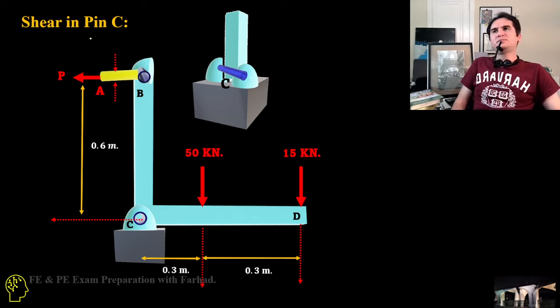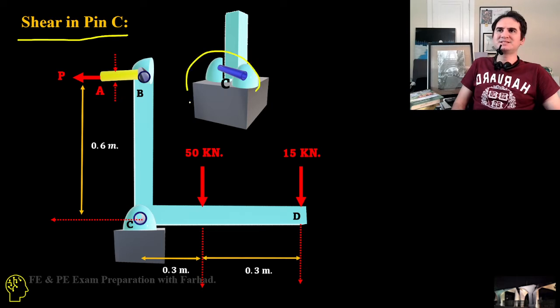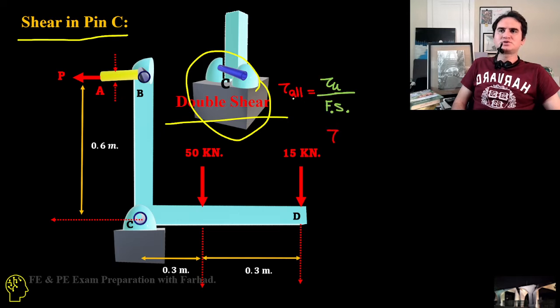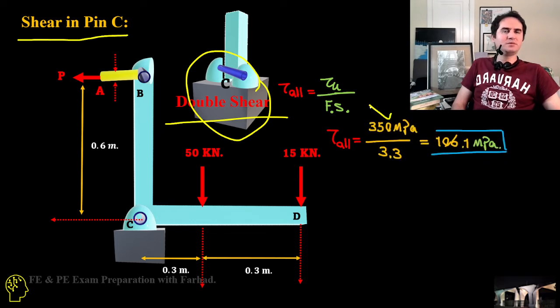In the second part, for shear stress at pin C, which you can simply see is in the double shear condition, shear allowable or acceptable is ultimate shear over factor of safety. Based on the problem statement, ultimate shear is 350 megapascals, factor of safety provided for the entire system is 3.3, and that gives us an acceptable shear of 106.1 MPa.